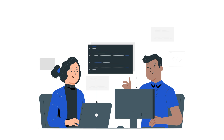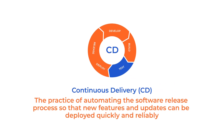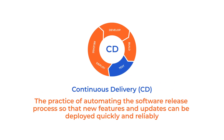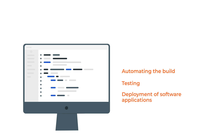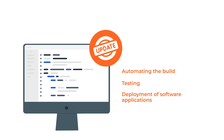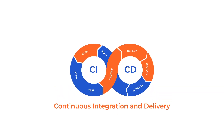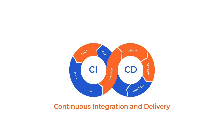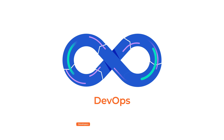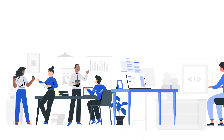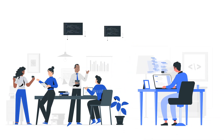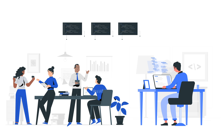Another key principle of DevOps is continuous delivery, which is the practice of automating the software release process so that new features and updates can be deployed quickly and reliably. This involves automating the build, testing, and deployment of software applications, making it possible to release new features and updates to customers in a matter of hours or even minutes. In addition to continuous integration and delivery, DevOps also emphasizes the importance of collaboration between developers and operations teams. DevOps practitioners work closely with developers to ensure that code changes are made in a way that is consistent with the overall software architecture and goals of the business.